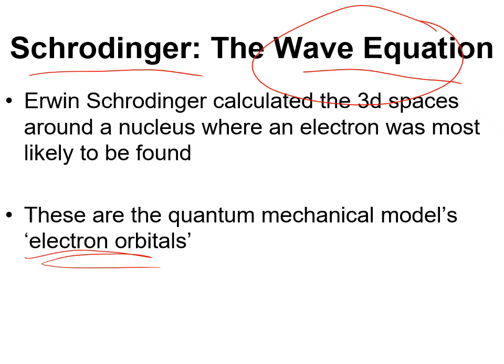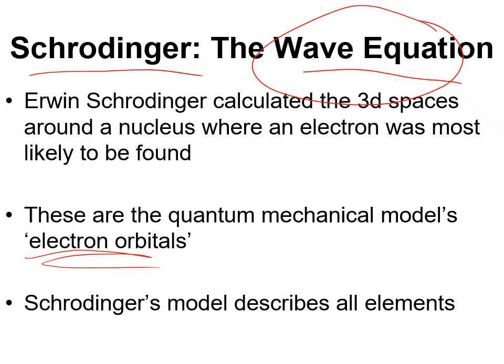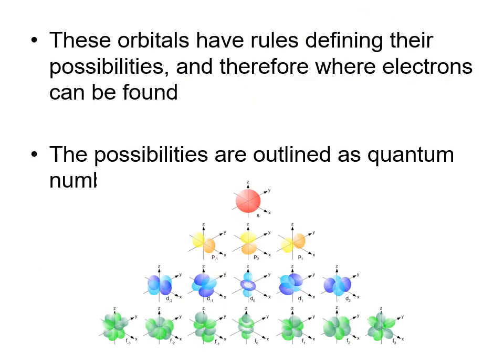Schrodinger's model describes not just hydrogen's electrons and where they would be, but it works for all of the elements. Therefore, we can explain a lot more properties of the elements based on what their electrons are doing using this quantum mechanical model developed by Schrodinger. We'll go over how this all works, but just getting into the idea of what it is is that there are certain rules defining where it's possible to find these electrons.